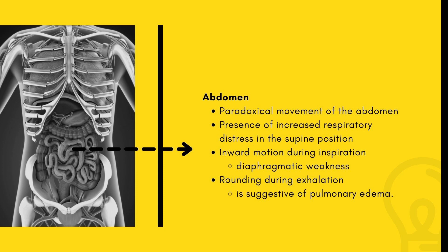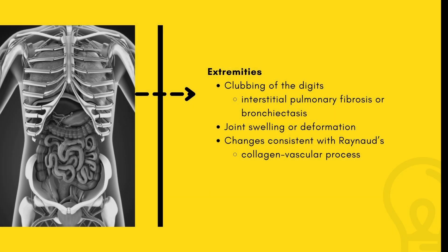When examining the abdomen with the patient in supine position, the physician should note whether there is paradoxical movement as well as the presence of increased respiratory distress in the supine position. Inward motion during inspiration is a sign of diaphragmatic weakness and rounding of the abdomen during exhalation is suggestive of pulmonary edema. Clubbing of the digits may be an indication of interstitial pulmonary fibrosis or bronchiectasis, and joint swelling or deformation as well as changes consistent with Raynaud's disease may be indicative of a collagen vascular process that can be associated with pulmonary disease.